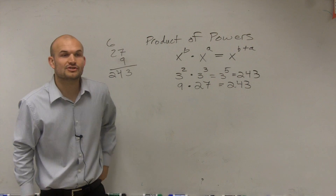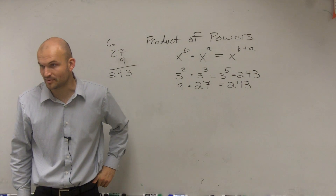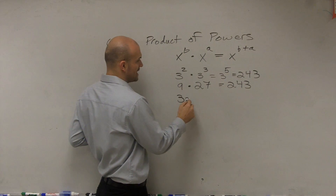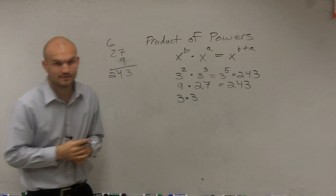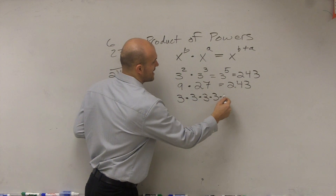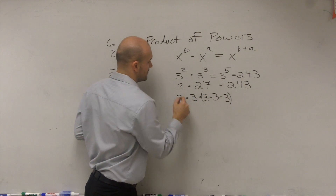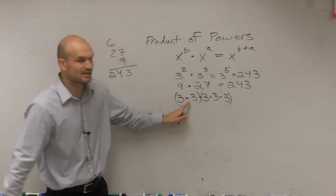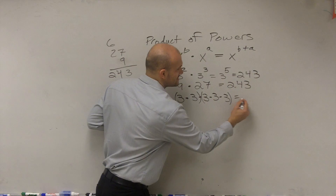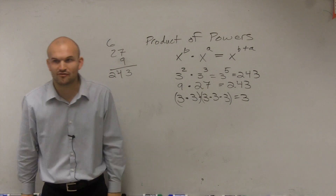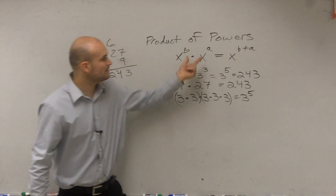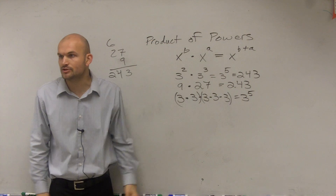The last thing I want to show you guys is one other way to explain this. If we look at this, 3 squared means 3 times 3, and 3 cubed means 3 times 3 times 3. So 3 squared times 3 cubed is 3 times 3 times 3 times 3 times 3 — which means when you multiply 3 by itself five times, that means 3 raised to the fifth power. So do you guys see how when you multiply with the same base, all you're simply doing is adding the exponents?